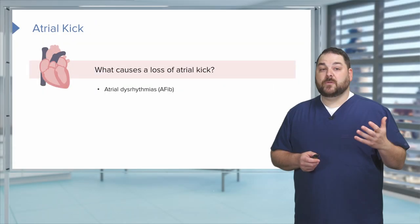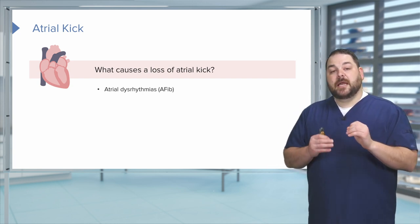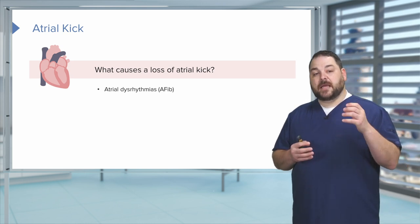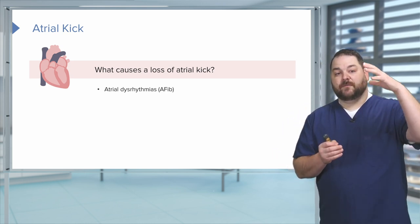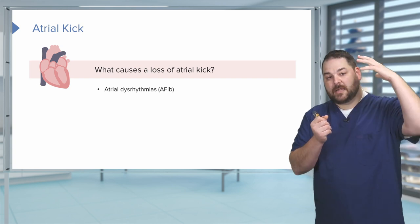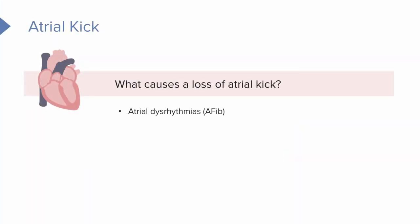When do we lose atrial kick? We lose atrial kick in anything that causes AV dissociation — anything that loses that association of atrial contraction followed by ventricular contraction. That would be atrial fibrillation, atrial flutter, and all of our heart blocks. Anything that disrupts that sequence, you're going to lose your atrial kick.